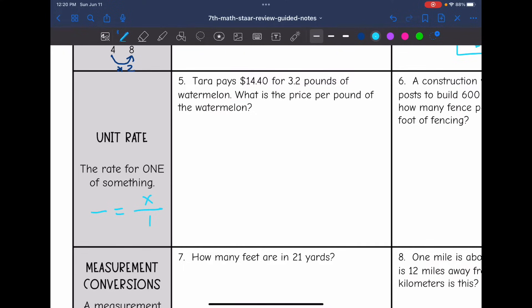So you will set up a proportion, and the second part of proportion, you'll be finding something out of one. So number five says, Tara pays $14.40 for 3.2 pounds of watermelon. What is the price per pound of the watermelon? So she paid, we know that she paid $14.40 for a certain number of pounds of watermelon. So that's how we'll set up our proportion. She paid $14.40 for 3.2 pounds, and we want to know what the price of one pound is. So now I can cross multiply here to solve. 1 times 14.40 is just 14.40. And then 3.2 times X is 3.2X.